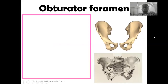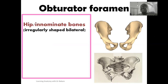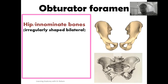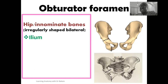Let's first look at the configuration of the obliterator foramen. The obliterator foramen is a foramen seen around the hip bone. The hip bone is an innominate bone that is irregularly shaped and bilateral. This bone is seen to form the pelvic girdle. Looking at this image, this is where we have the hip bone, which is structurally made up of three bones. The hip bone is divided into the ilium, highlighted here in green.